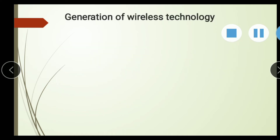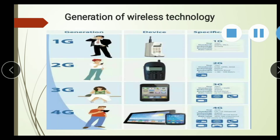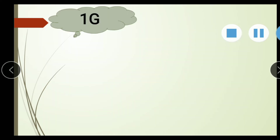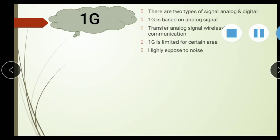Now we discuss the generations of wireless technology: first generation, second generation, third generation, and fourth generation. First generation is based entirely on analog signals for wireless communication. The speed limitation of first generation is limited area coverage and it is highly exposed to noise.